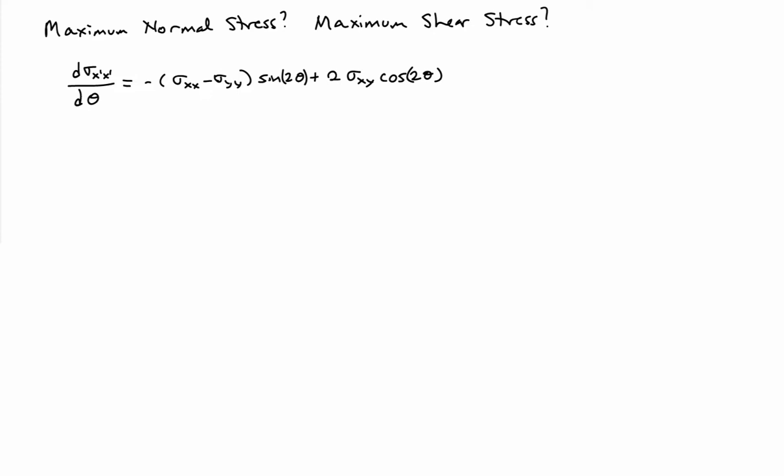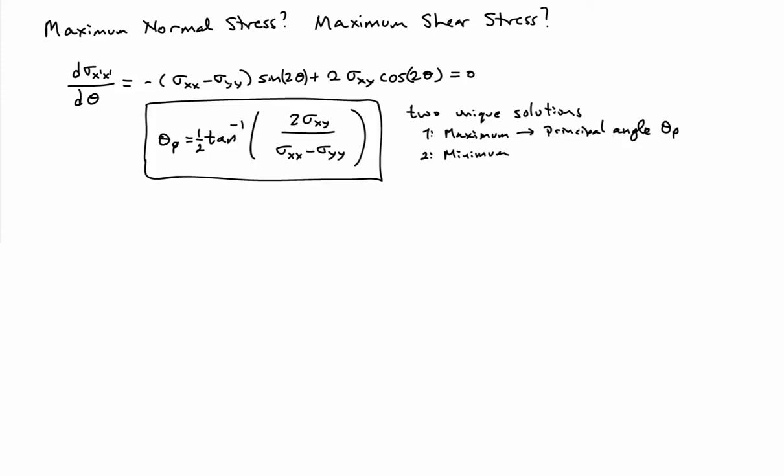Taking the double angle form of the transformation relationship, I can take the derivative once with respect to theta, and I have the relationship: minus the difference between sigma_x and sigma_y times sine(2θ), plus 2·sigma_xy times cosine(2θ). Setting that equal to 0 and solving for the angle — we call that angle theta_p, the principal angle — it equals one-half the arctangent of twice the shear stress divided by the difference of the two normal stresses.